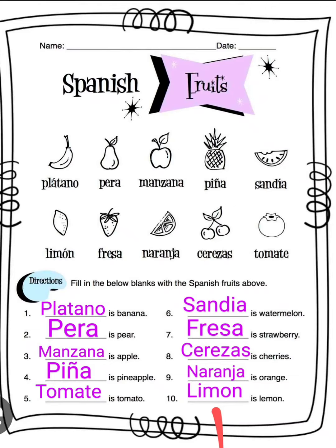...sandía is watermelon, sandía. Number seven: fresa is strawberry, fresa. Number eight: cerezas is cherries, cerezas. Number nine: naranja is orange, naranja.